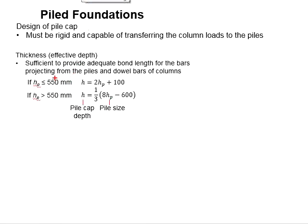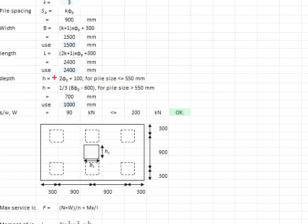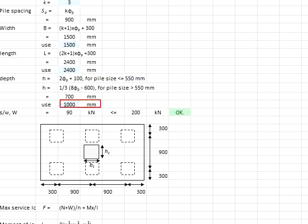The next step is to determine the height of the pile cap. The pile size is 300 mm, which is less than 550 mm, so you can use the appropriate equations to determine the height. Substituting into the equation gives a minimum height of 700 mm. In this case, extra depth is provided, giving a height of 1000 mm. Check the self-weight of the pile cap — it is found to be less than the estimated 200 kN, which is acceptable.